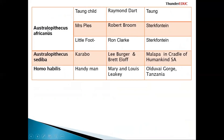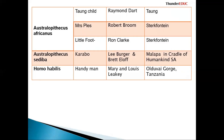We have three fossils called Australopithecus africanus. The first one is Taung child — who discovered it is Raymond Dart, exactly in Taung. It's called Taung child because it was discovered in Taung. Then you have Mrs. Ples — Robert Broom discovered it in Sterkfontein caves. And then you have Little Foot, discovered by Clarke in Sterkfontein. They discovered it in the same place as Mrs. Ples, but not in the same period of time.